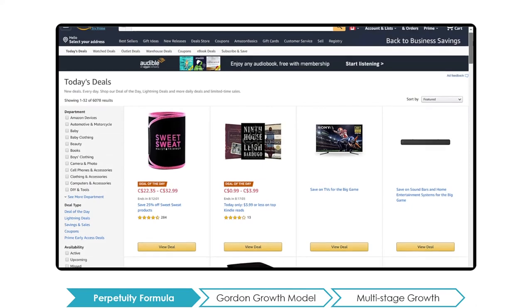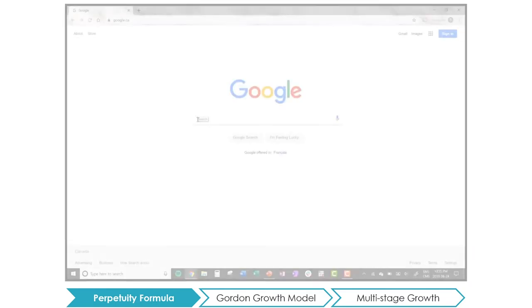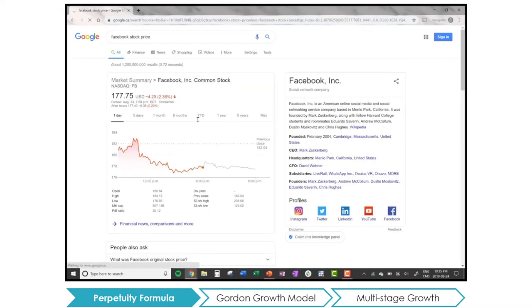In the stock market, investors are able to see the market prices of all the publicly traded stocks, kind of like how when you're online shopping, Amazon lists the prices of all their products. But you may wonder, how did the market come up with these prices? How does the market know that the price of Facebook's stock is, say, $177 per share?